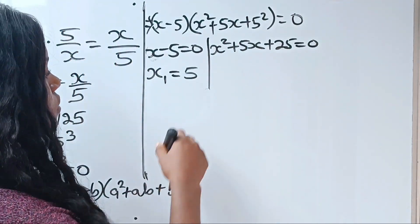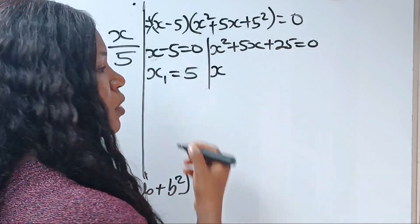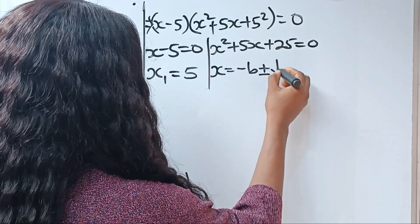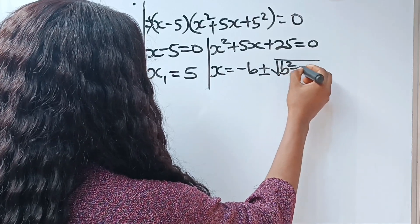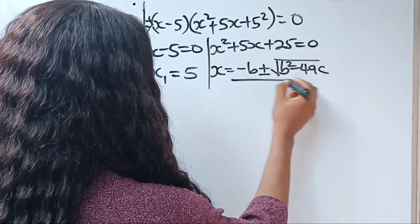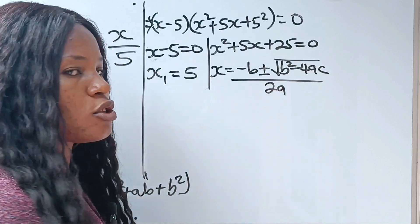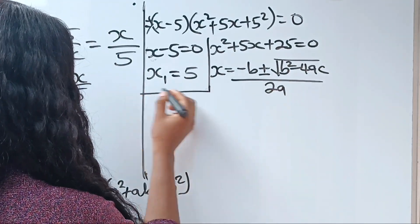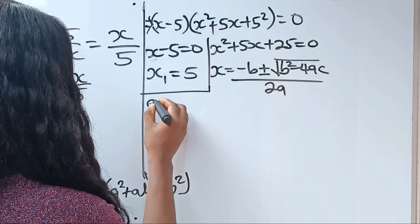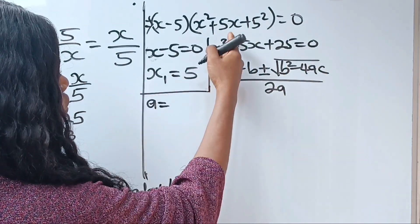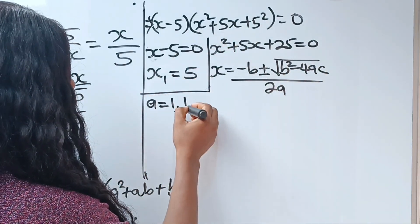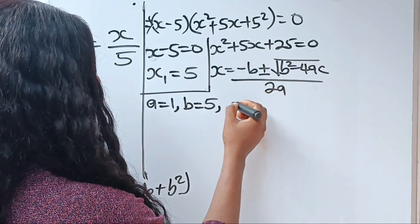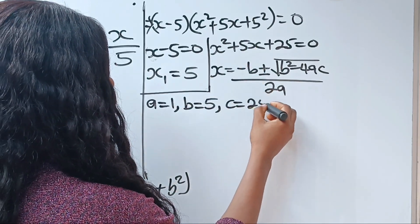To do that, we are going to use the quadratic formula: x is equal to minus b plus or minus the square root of b squared minus 4ac, everything divided by 2a. In this particular equation, our a is equal to the coefficient of x squared, which is 1. Our b is the coefficient of x, which is 5. While our c is our constant, which is 25.